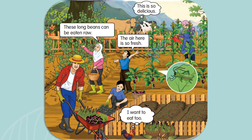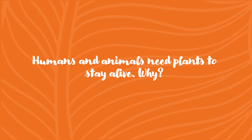Look and observe this picture. This is so delicious! These long beans can be eaten raw. The air here is so fresh. I want to eat too! Humans and animals need plants to stay alive. Why? Let us discuss about this.